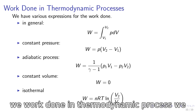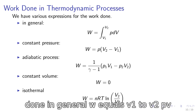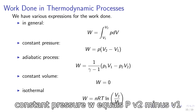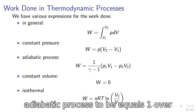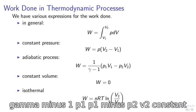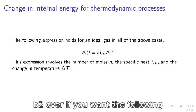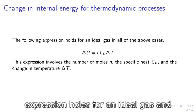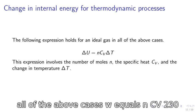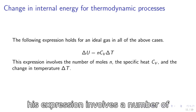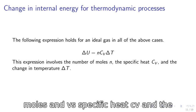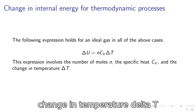Work done in thermodynamic processes. We have various expressions for the work done. In general, W equals integral from V1 to V2 of PDV. Constant pressure: W equals P(V2 minus V1). Adiabatic process: W equals 1 over gamma minus 1 times (P1V1 minus P2V2). Constant volume: W equals 0. Isothermal: W equals NRT LN V2 over V1. The following expression holds for an ideal gas in all of the above cases: Delta U equals NCV delta T. This expression involves the number of moles N, specific heat CV, and the change in temperature delta T.